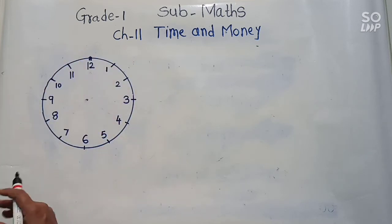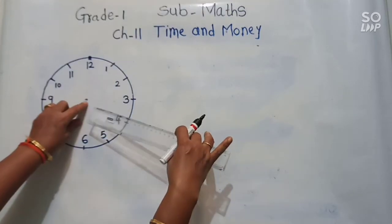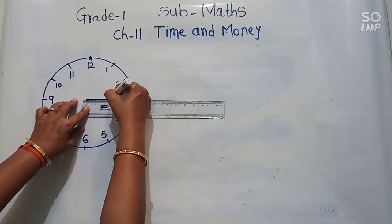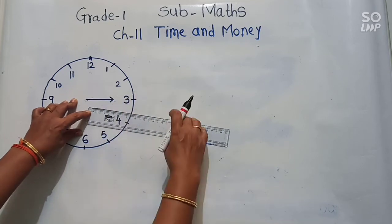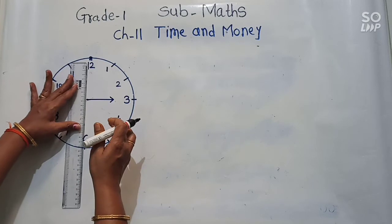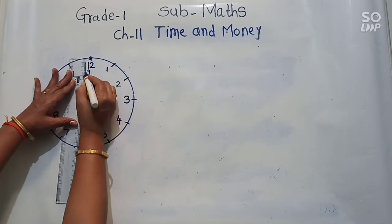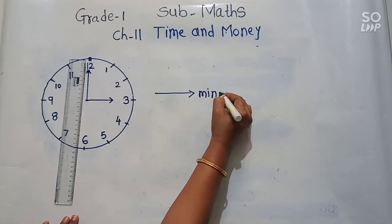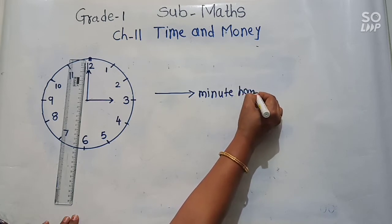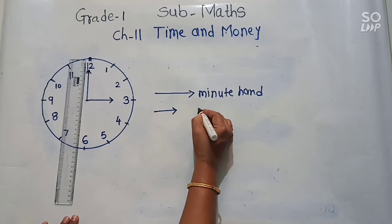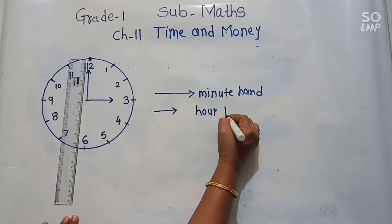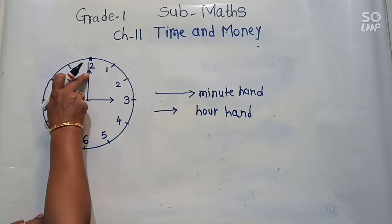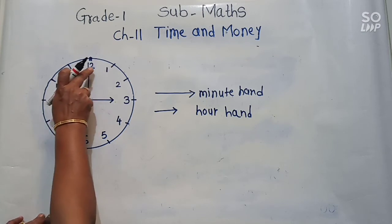The hour hand is short. From the center, we make a short hand for the hour hand. Look — this is a short hand and it is called the hour hand. And now we will make the long hand. Long hand means minute hand. This long hand is the minute hand. When the minute hand moves from one number to another number, it completes 5 minutes.